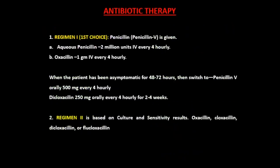The recommended antibiotic regimen for osteomyelitis of the jaws: the antibiotic of first choice is penicillin, considered as empirical therapy. You may administer aqueous penicillin 2 million units intravenously every 4 hours, or oxacillin 1 gram IV every 4 hours. Once the patient has been asymptomatic for 48 to 72 hours, switch to penicillin V orally 500 mg every 4 hours, or dicloxacillin 250 mg orally every 4 hours for 2 to 4 weeks.